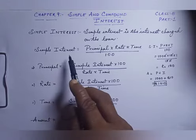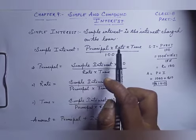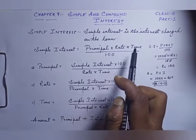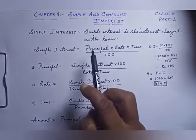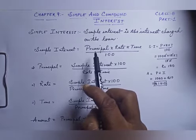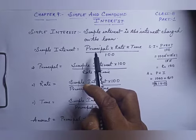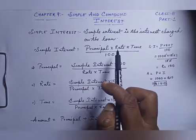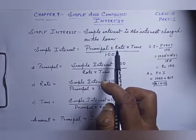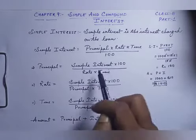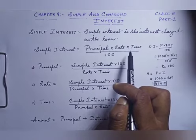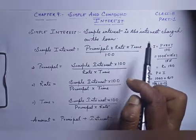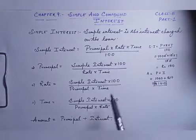The formula we use to find simple interest is: SI = Principal × Rate × Time upon 100. Principal is the amount taken from a bank, rate is 10 percent per year, and time is one year.